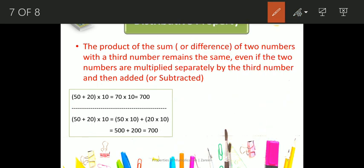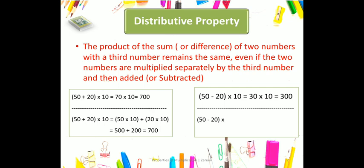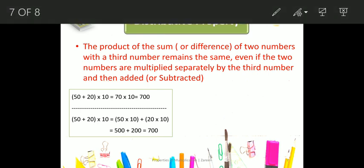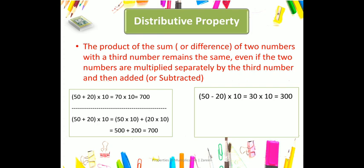If we look at the distributive law of multiplication over subtraction: here first we will subtract two numbers — that will give a result — and after subtracting we will multiply by the third number, and that will be equal to if we separately multiply the two numbers with the third number. For example, here if we multiply 50 with 10, or 50 with 20 separately — that will be equal.